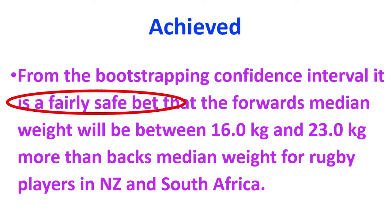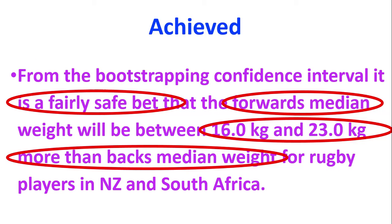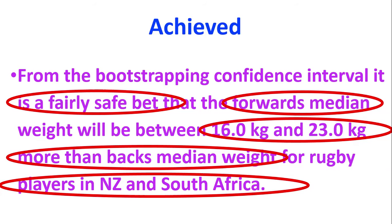A fairly safe bet that the forward's median weight is going to be between 16 and 23 kilograms more than the back's median weight. Note: I'm talking about the median weights, I'm talking about forwards compared to backs, and this is where we've got to talk about our population — rugby players in New Zealand and South Africa. We took a sample of rugby players, but we're now interpreting this confidence interval in terms of the population we want to know about, which is all rugby players in New Zealand and South Africa.